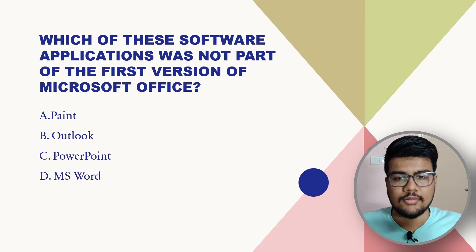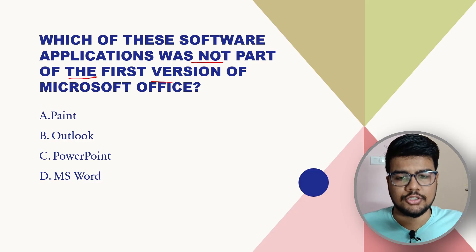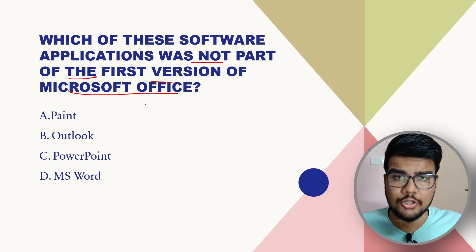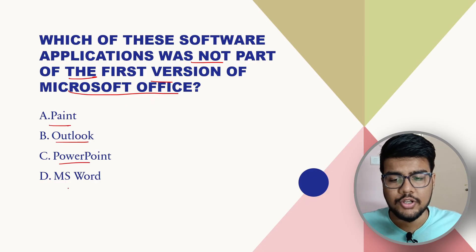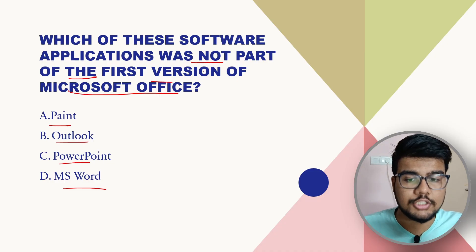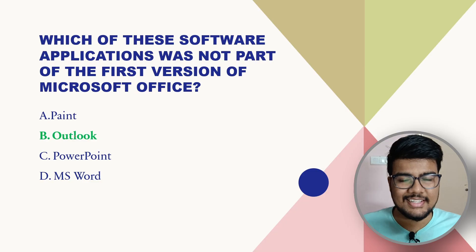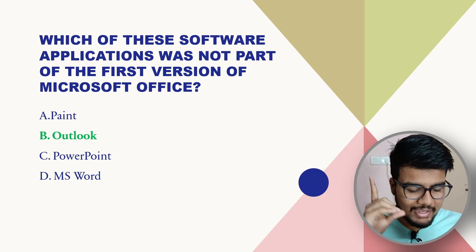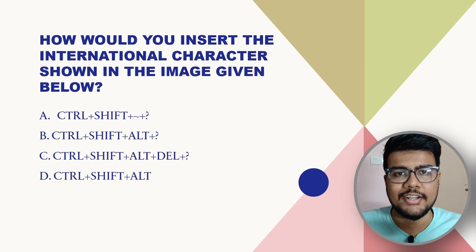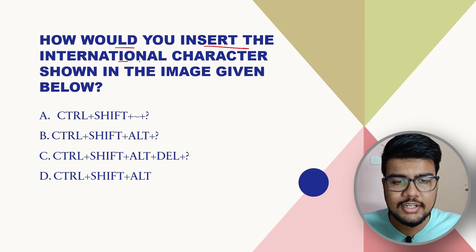Now, which software application was not a part of the first version of Microsoft Office? The options are Paint, Outlook, PowerPoint, and MS Word. Which one was not included in the first version? The answer is Outlook — bingo, that's the correct answer.